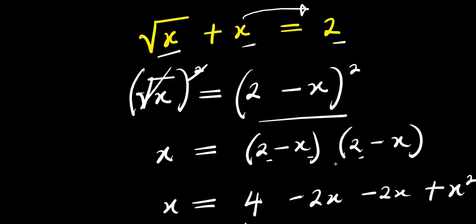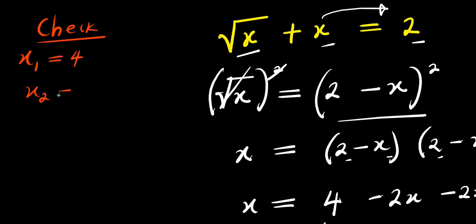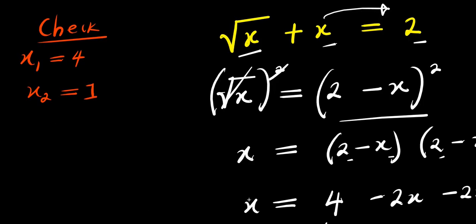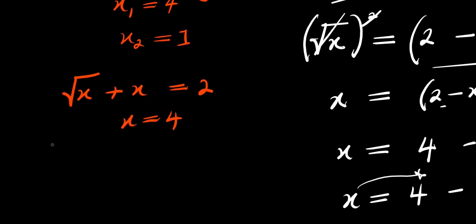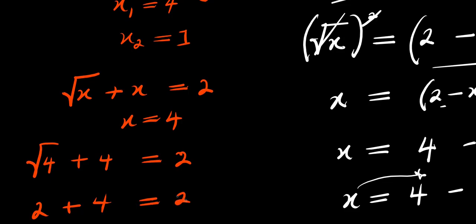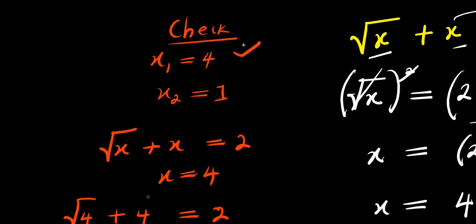Now the next thing we're going to do is check by inserting these values for x. We have x1 equals 4 and x2 equals 1. The original equation is square root of x plus x equals 2. Let's consider when x equals 4: square root of 4 plus 4 equals 2 plus 4, which is 6 — that is not equal to 2. So this value x equals 4 is incorrect.